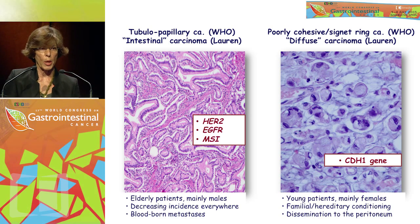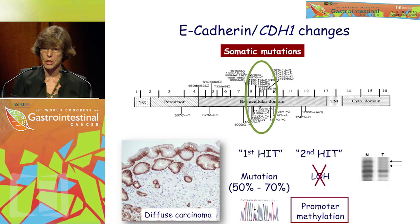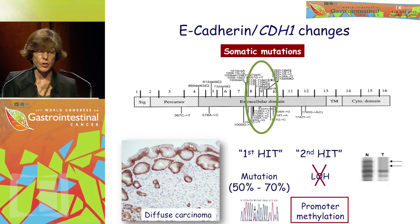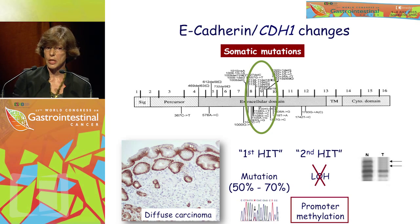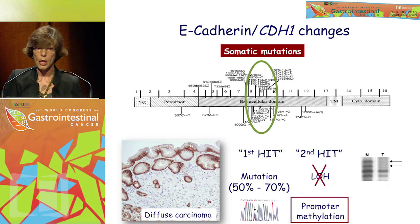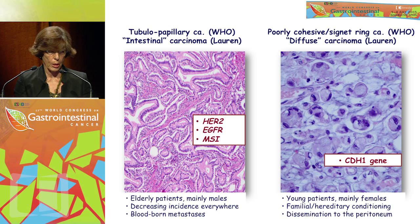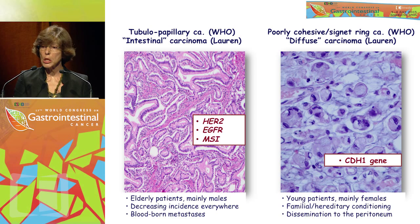The WHO classification I'm showing is not substantially different from the Japanese classification of gastric cancer. What is substantially different is from the Nakamura classification. I want to highlight this because it has an impact on the interpretation of studies we perform, namely at the molecular level.